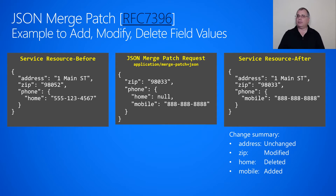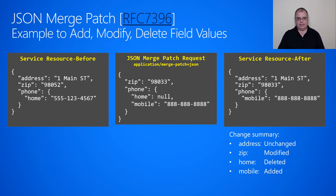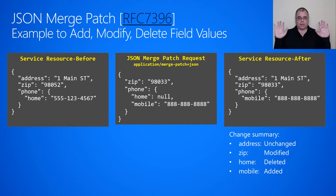I'm then saying I want the phone number to have home set to null. With JSON Merge Patch, when you set a value to null, that means you want to delete it. So you'll notice that on the right-hand side, the home is now gone because the null indicated to delete it. But I've added mobile here with 888, so this did an add operation. Also notice that anything I don't mention in the JSON Merge Patch, like address, is left untouched, so the address remained with 1 Main Street.